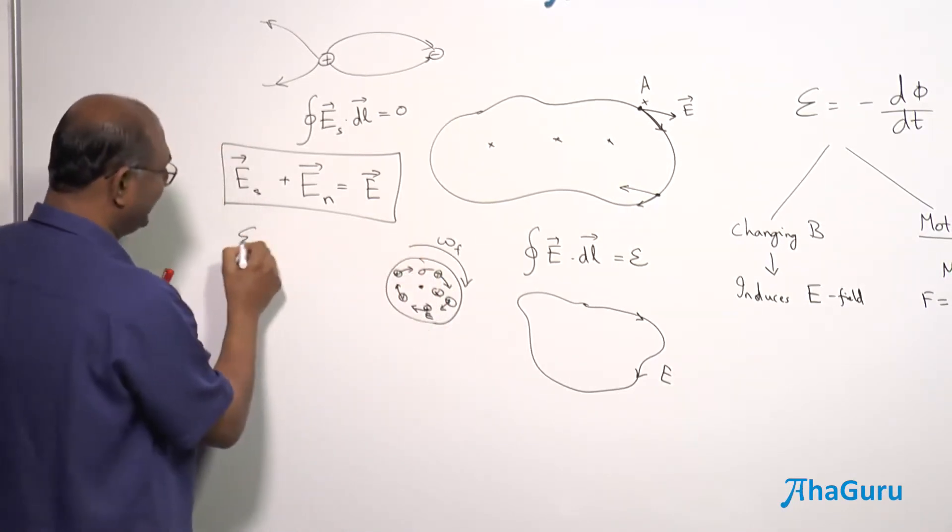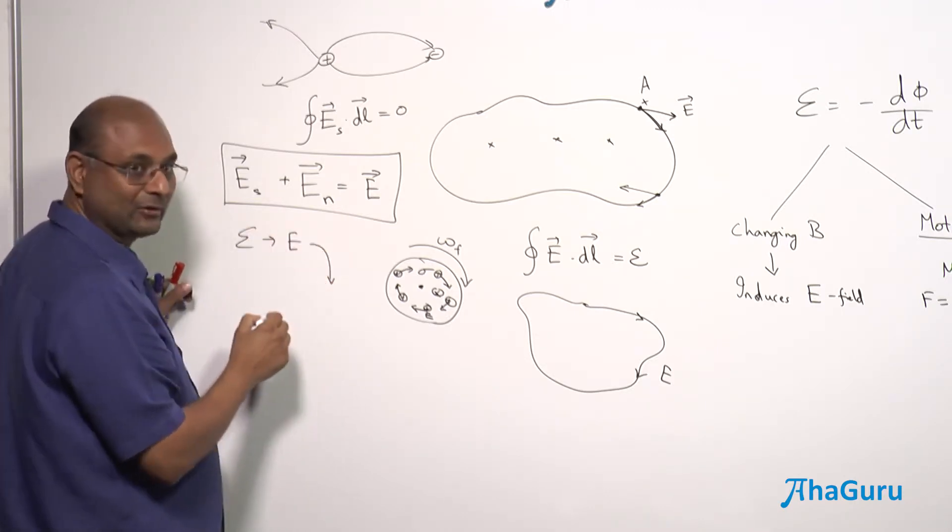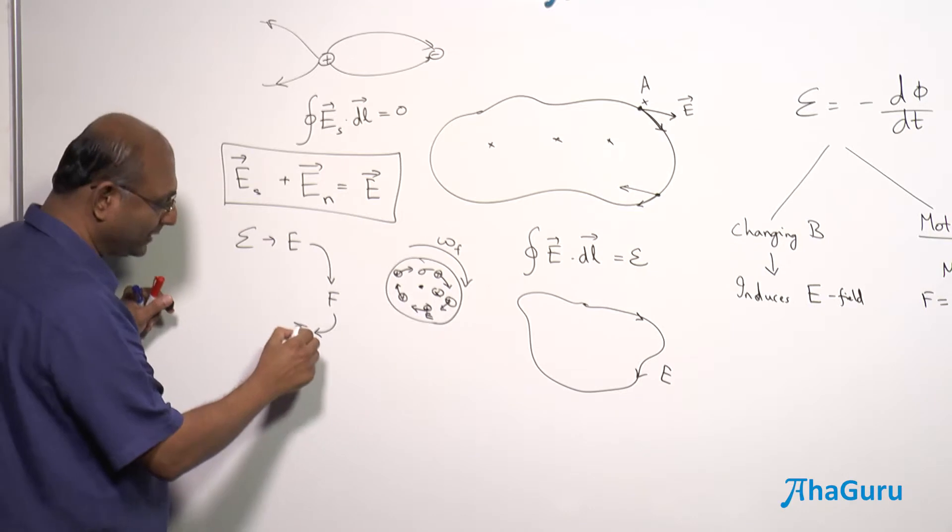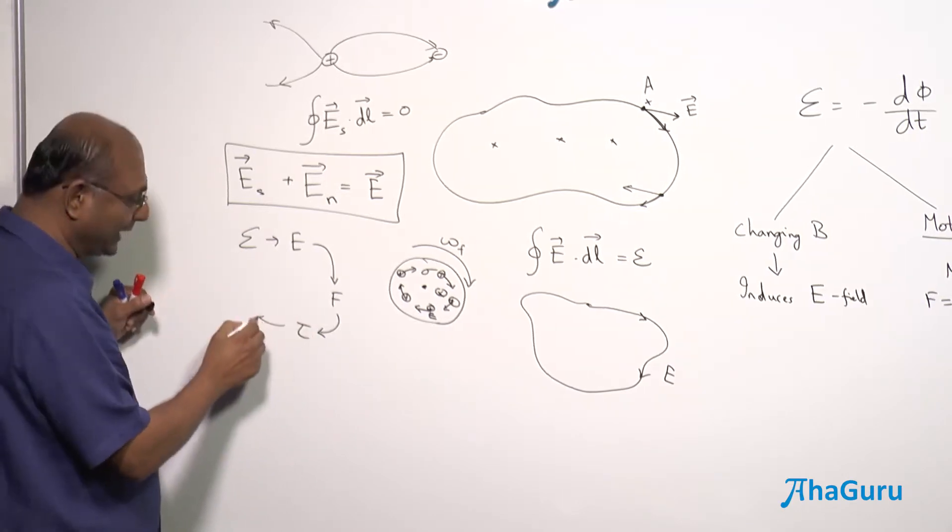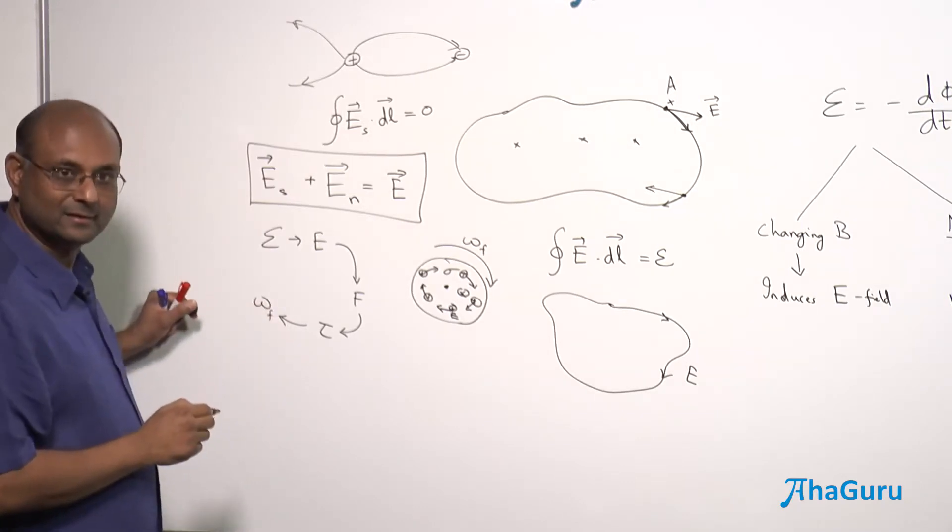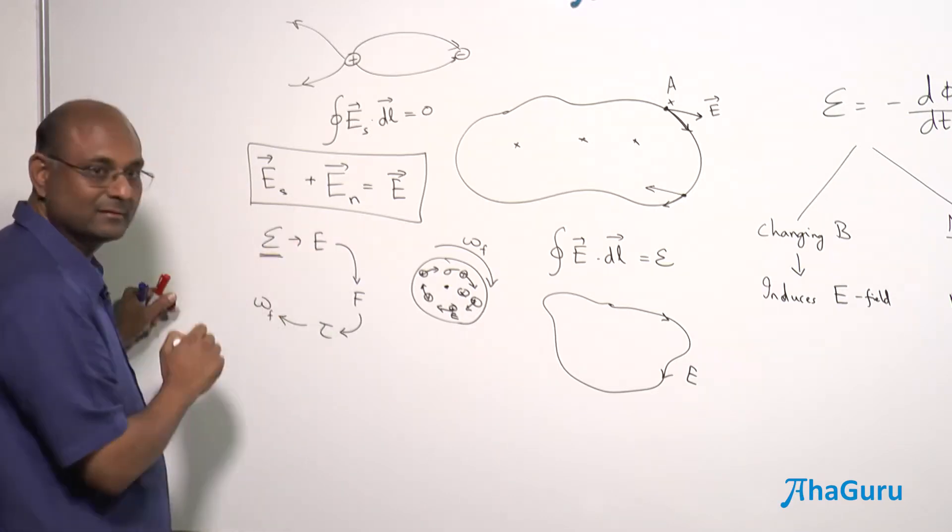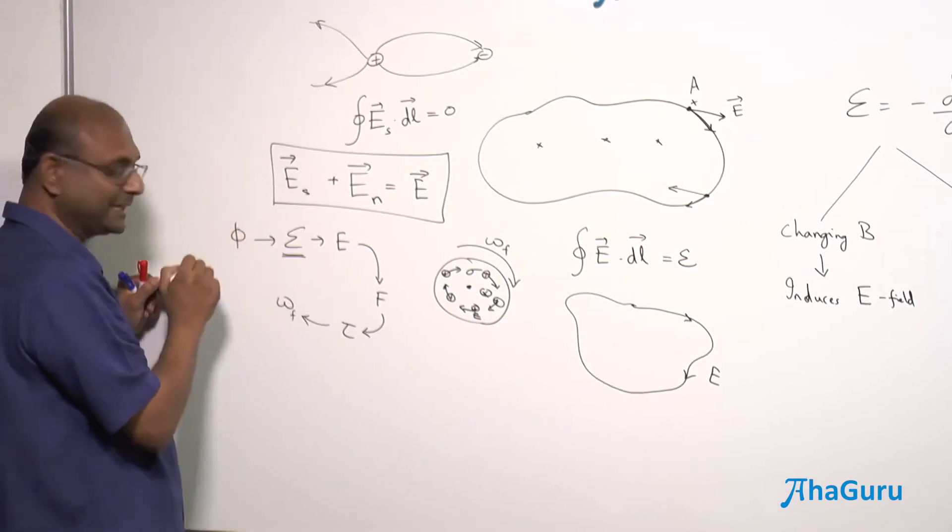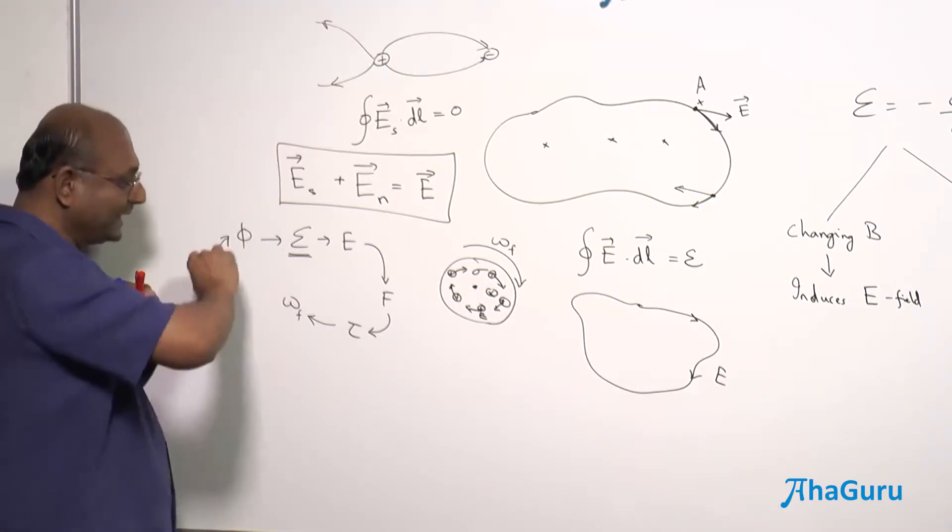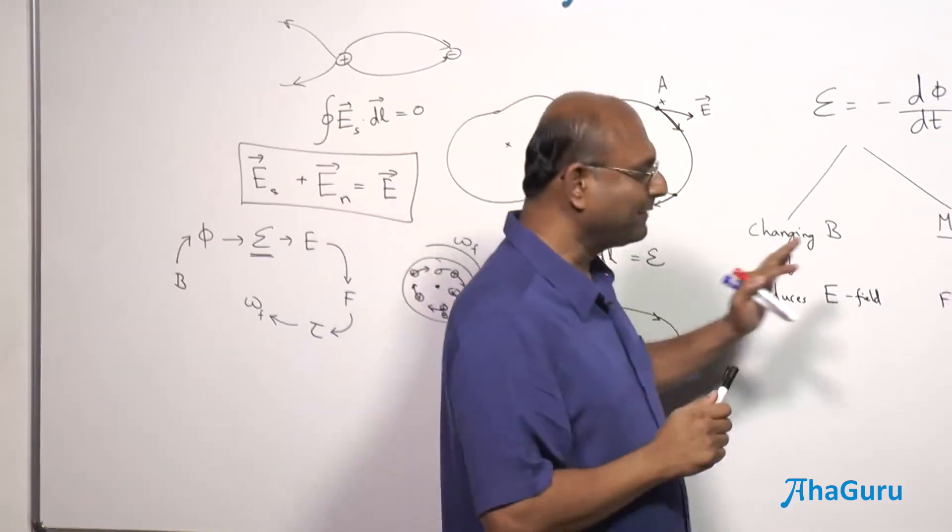Why? Because the electric field is the one that is going to decide how much is the force. So, first from the EMF, I should be able to calculate electric field. From the electric field, I should be able to calculate force. And from the force, I should be able to calculate torque. From torque, I will be able to calculate either alpha or I will be able to calculate omega. I am not talking about this completing the loop. But basic idea is, why is this changing? Why is this being produced? Because there was a flux change. Why was there a flux change? Because there was a B change. So, starting from B, we should be able to get to omega.